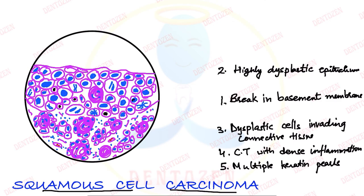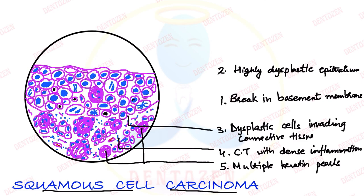Now let's quickly label all these features. We can see multiple keratin pearls here. We can see connective tissue with dense inflammation. We can see dysplastic cells invading into the connective tissue. We can see break in the basement membrane. We can see highly dysplastic epithelium. So this is a well-differentiated squamous cell carcinoma.